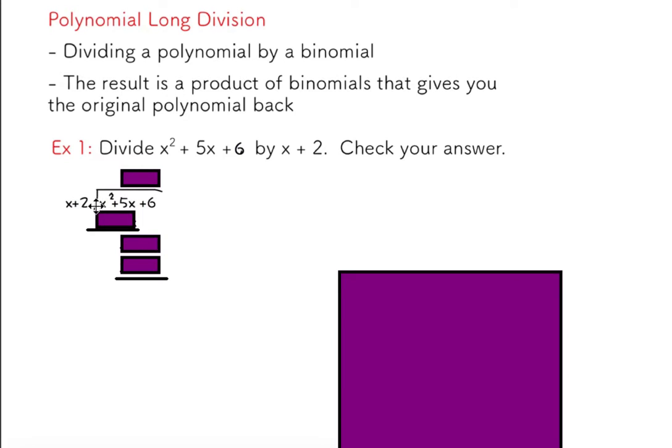Next thing you do is you ask yourself, if I take this first term, this x squared, and I divide it by just this x value here, not the 2, I'm going to ignore this for the time being. What do I get? So what you're essentially doing is x squared divided by x. If you know your exponent laws, you should be able to see that that's just x.